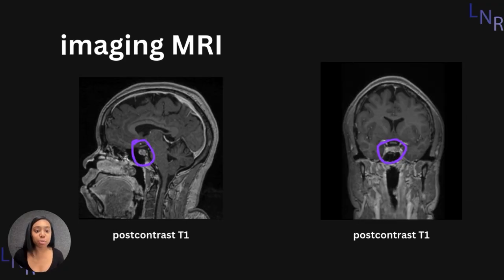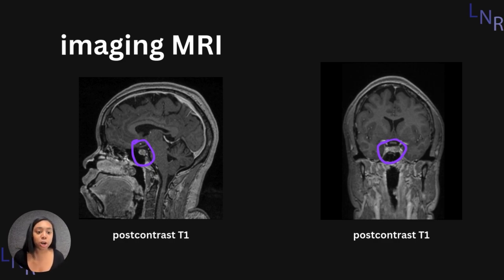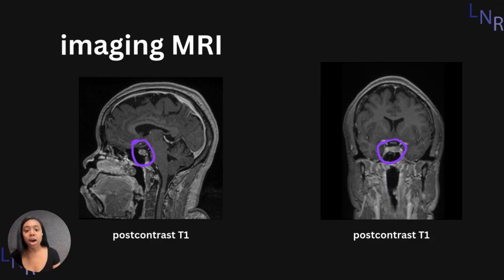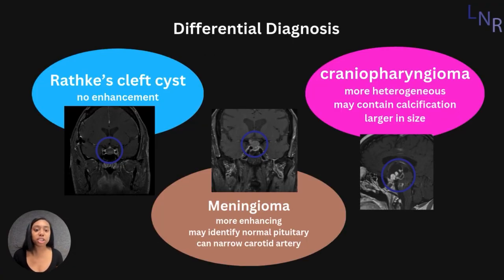Here is some more imaging to further solidify the MRI findings. Both of these are post-contrast T1-weighted. Circled in purple on the left side of the screen, you can see the darkly lit pituitary adenoma surrounded by the brightly lit surrounding structures. On the right side of the screen, we have a frontal view — again, post-contrast T1-weighted — where the surrounding structures are lit more brightly than the actual pituitary adenoma.